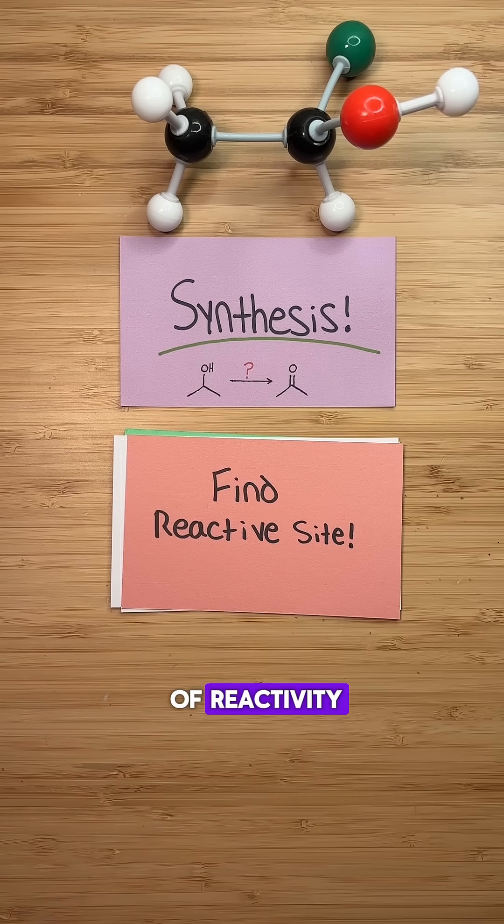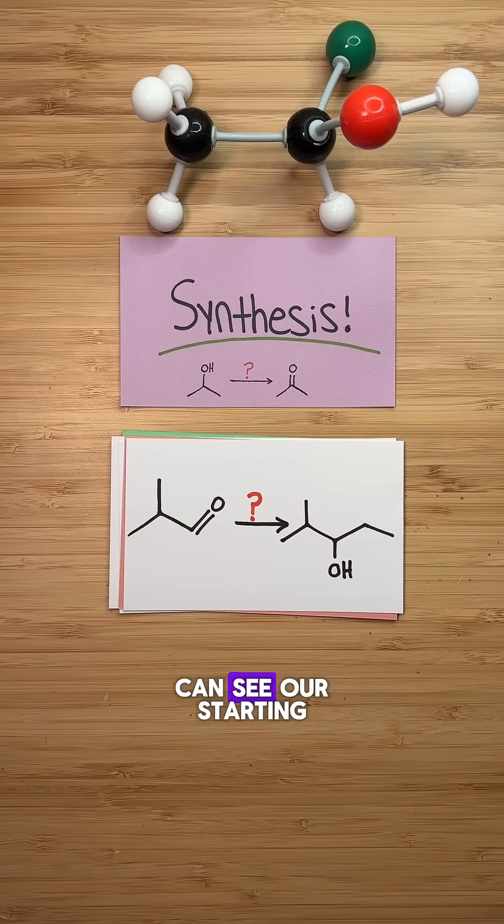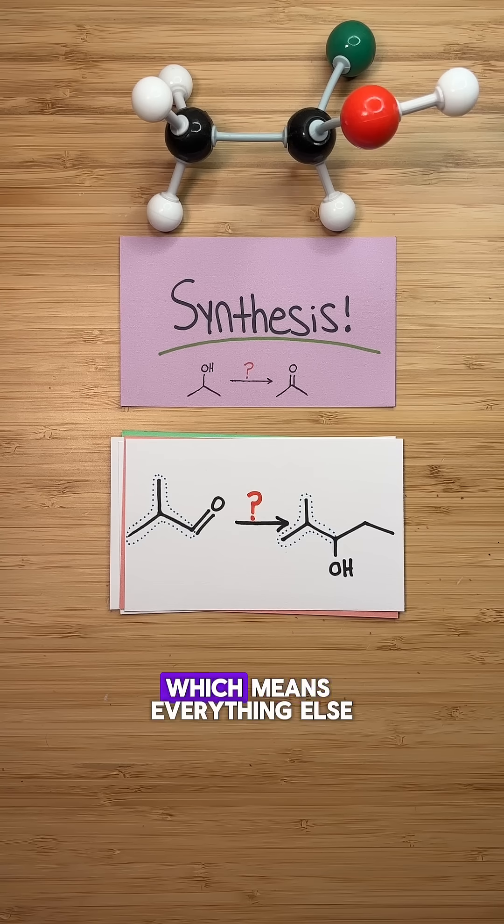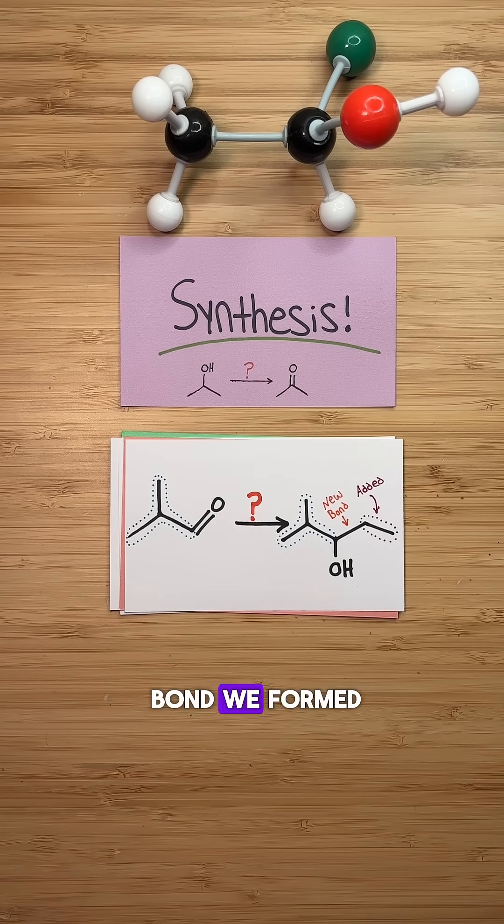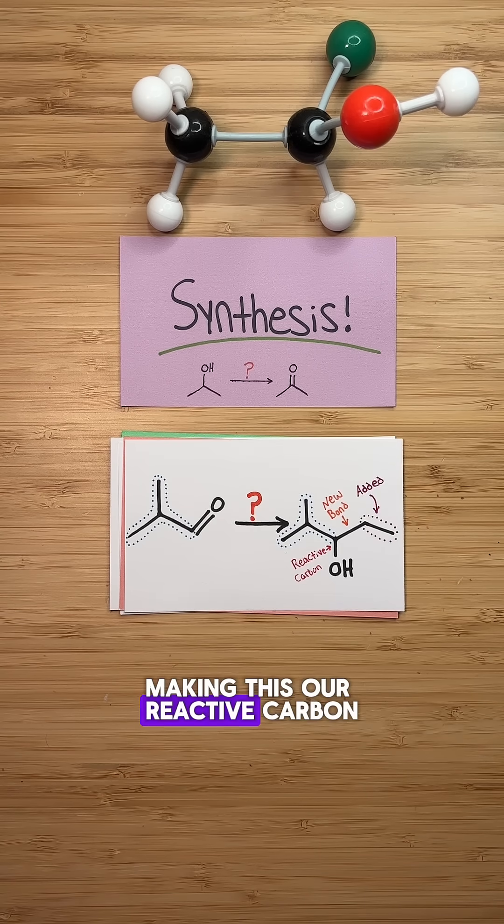Second, find the site of reactivity. In this example, we can see our starting material in the product, which means everything else was added. This is the new bond we formed, making this our reactive carbon.